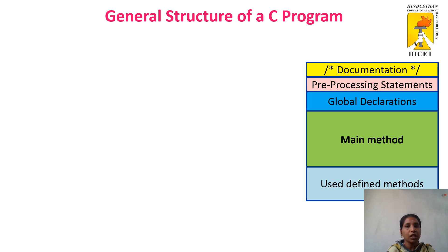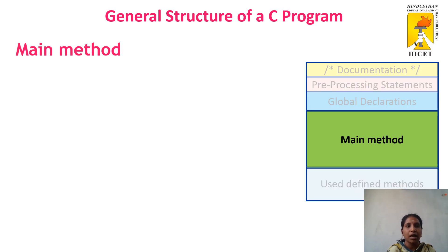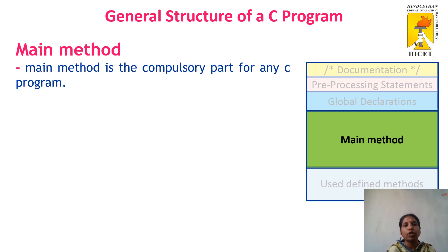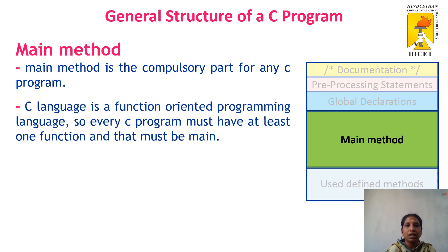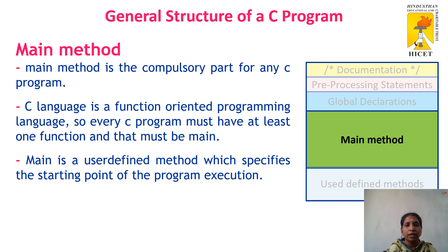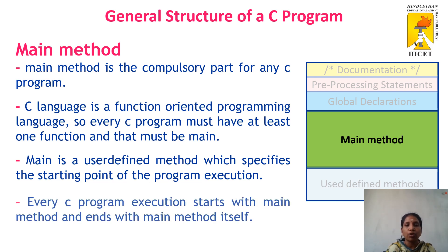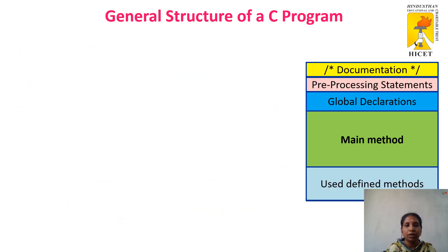Next comes the main part of the C program — the main method. The main method is the most important part; it is compulsory for any C program. Without the main method the program will not execute, and the program starts its execution only from the main function. C is a function-oriented language, so every statement must be written inside a function. Every C program must have a main function, which specifies the starting point of execution. Every program execution starts and ends with the main method.